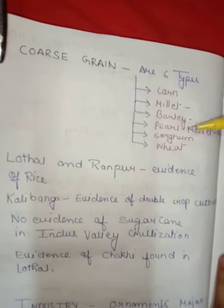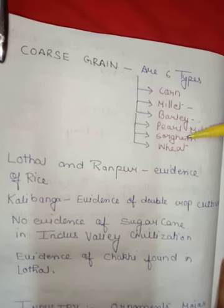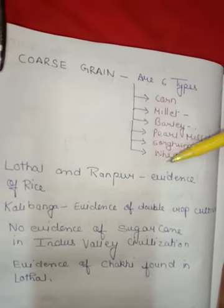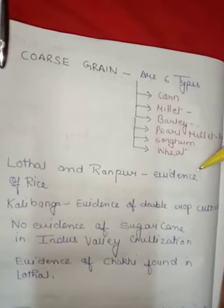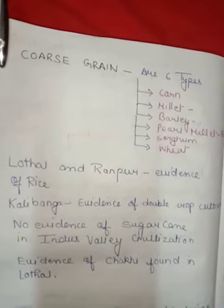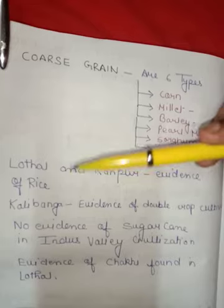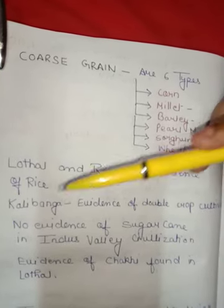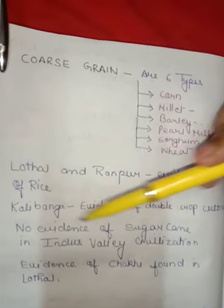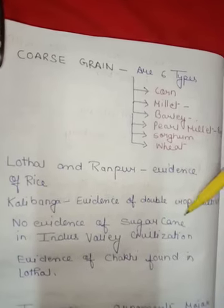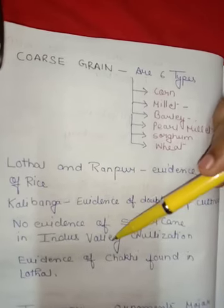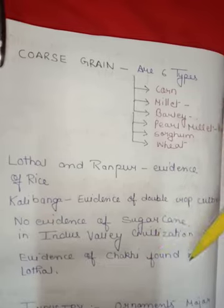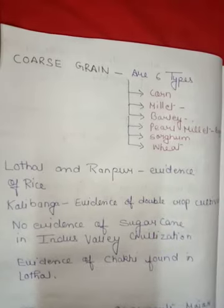The fifth coarse grain is sorghum and the sixth is wheat. Evidence of rice comes from Lothal and Rangapur. Evidence of double crop cultivation comes from Kalibangan. There is no evidence of sugarcane in Indus Valley Civilization. Evidence of a chakhi (grinding wheel) was found from Lothal.